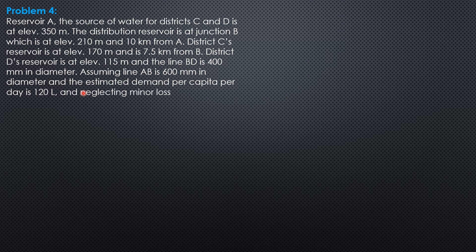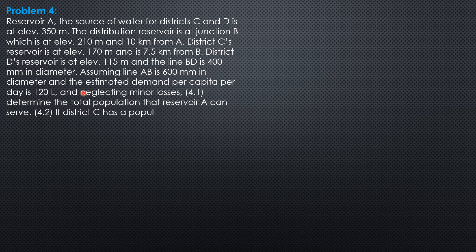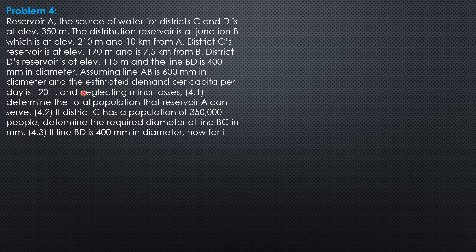District C's reservoir is at elevation 170 meters and is 7.5 kilometers from B. District D's reservoir is at elevation 115 meters and the line BD is 400 mm in diameter.